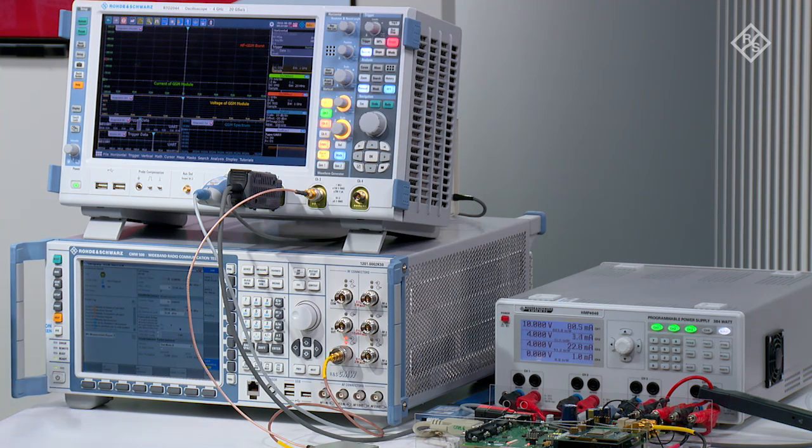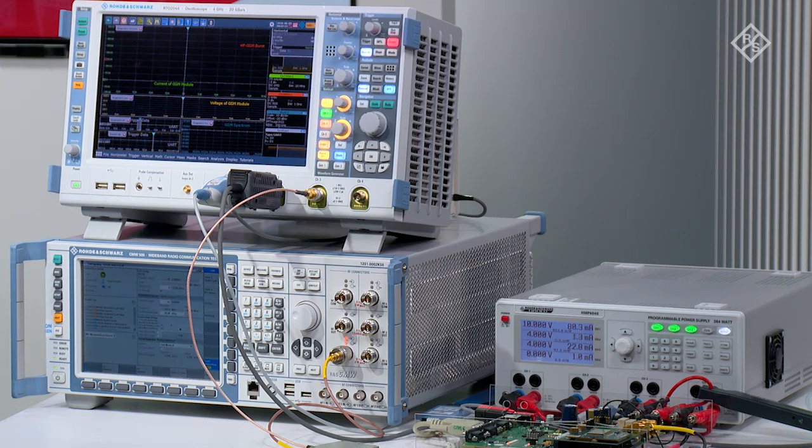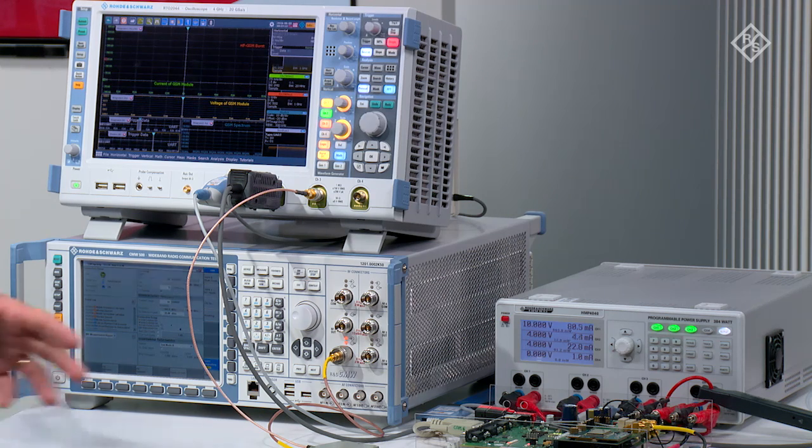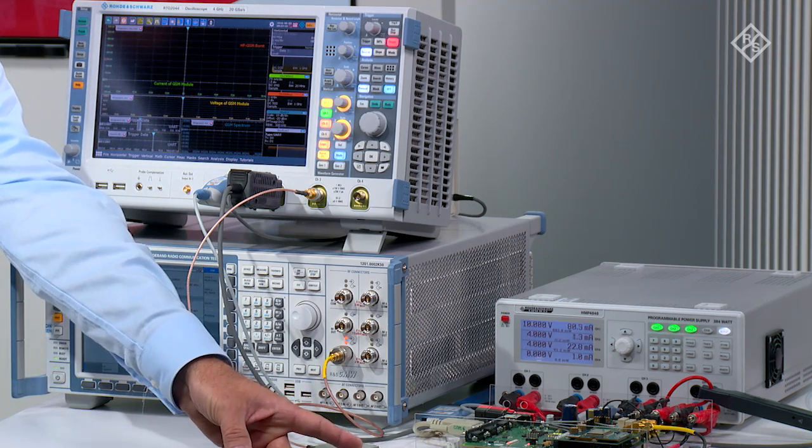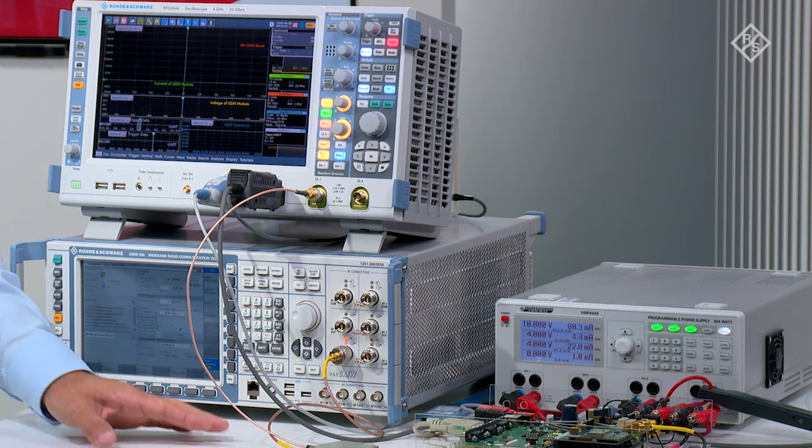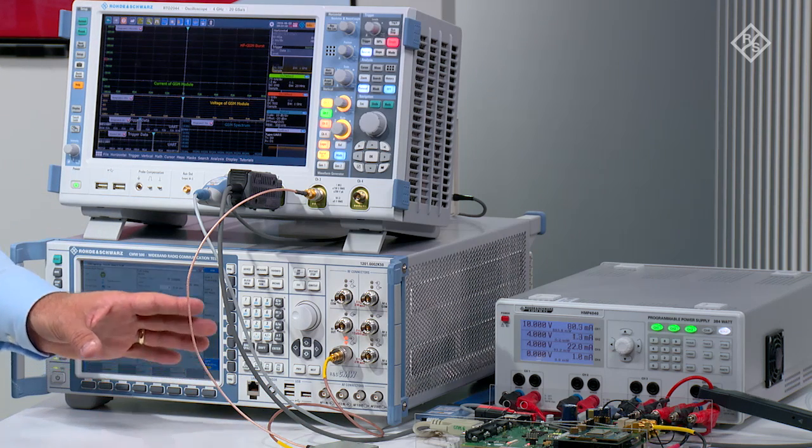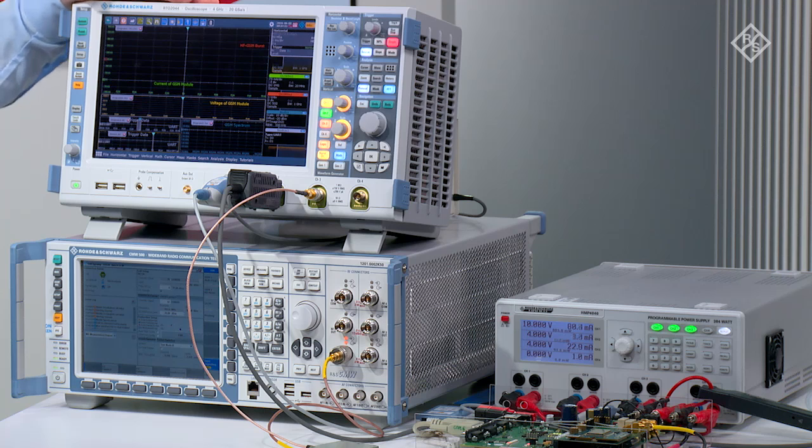In this case we're actually using the cellular network to talk to the Internet so we have it set up with the RF port, the RF interface, air interface connected to the splitter and we're actually monitoring the RF signal on the oscilloscope. This is an RTO 2044 oscilloscope from Rohde & Schwarz.